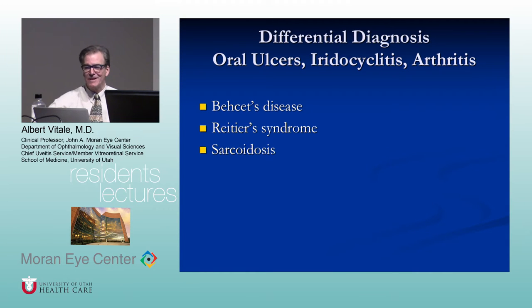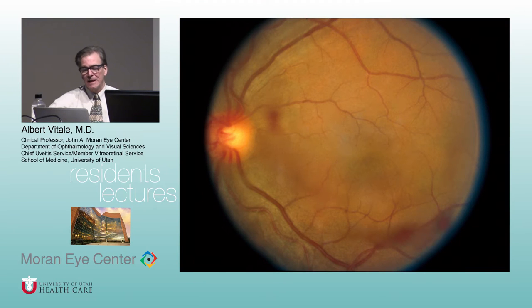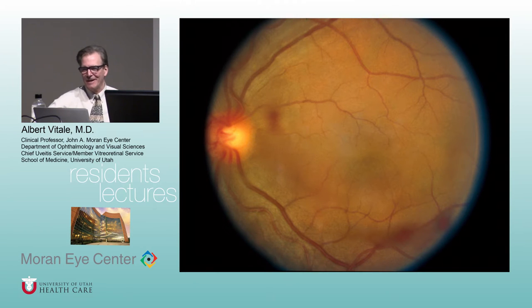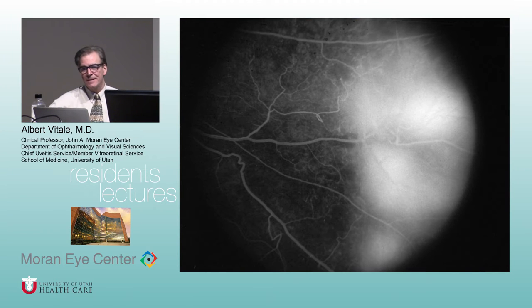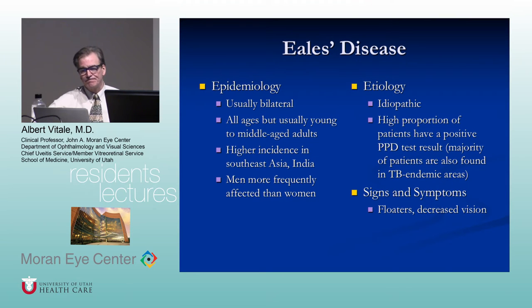Differential diagnosis of oral ulcers, iridocyclitis, and arthritis: Behcet's, reactive arthritis, and sarcoid. Eales disease — or idiopathic retinovanculitis — is thought to be due to hypersensitivity reactions to tuberculoprotein. High prevalence in Southeast Asia and India, men more than women, high proportion of patients have a positive PPD test. Vitreous hemorrhage and vasculitis are commonly seen. These patients should be treated with anti-VEGF therapy and laser, and vitrectomy if decreased vision due to vitreous hemorrhage.